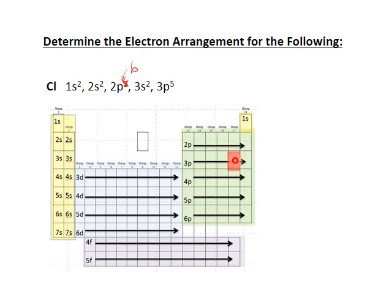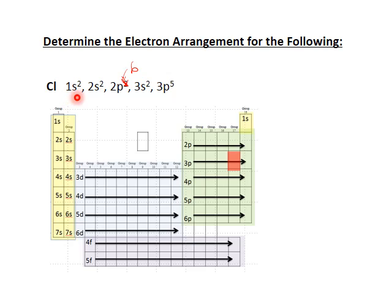After a correction, the 2p gets six electrons. To verify: 2 + 2 + 6 = 10, plus 2 more is 12, plus 5 more is 17 — and the atomic number for chlorine is 17, so that works out correctly.